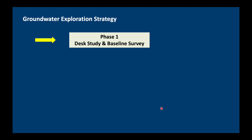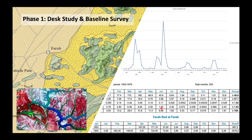The first phase is the desk study and baseline survey. It's not that expensive, and at the end of it we can decide whether we stop the project, proceed with caution, or give it a green light. During the desk study, all we want to do is to collect as much information as we can about the project area.